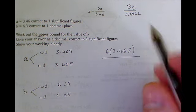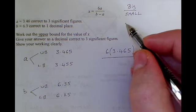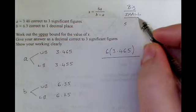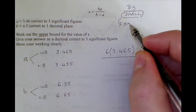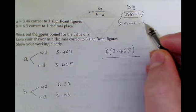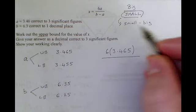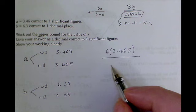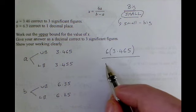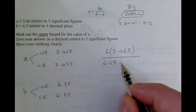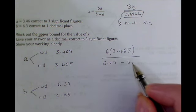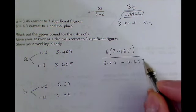I've got B take away A. So if B was as small as it could possibly be, and I took away the largest A I could possibly get, that would get me the smallest denominator it's possible to get. So let's do that. So the smallest B is 6.25, and I'm taking away the largest possible A, which is 3.465.